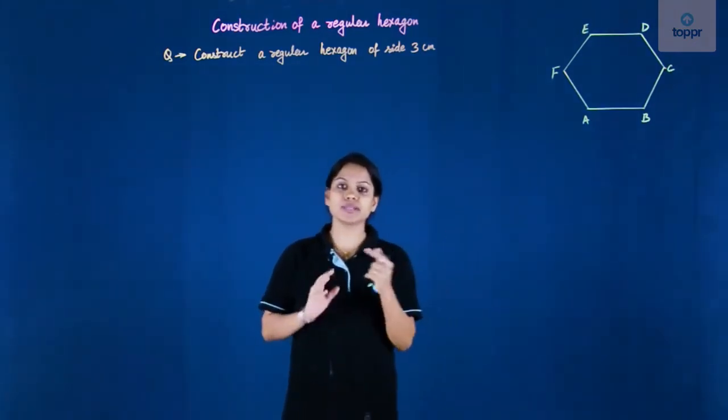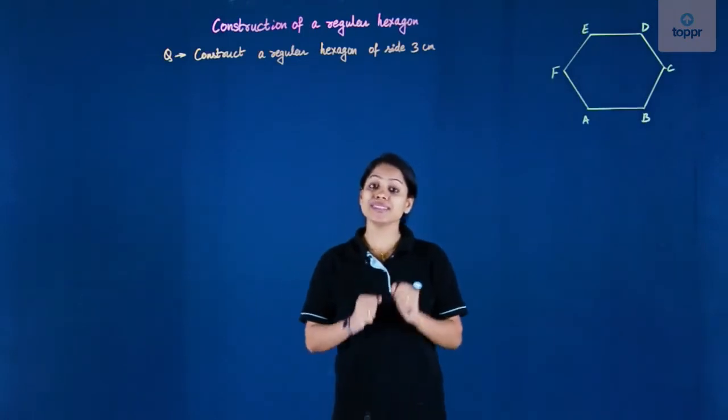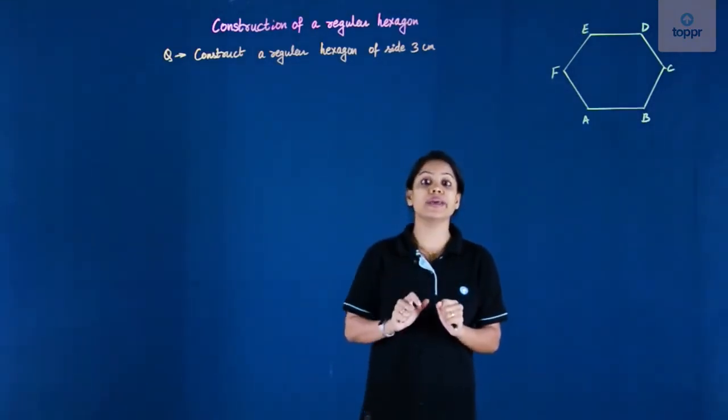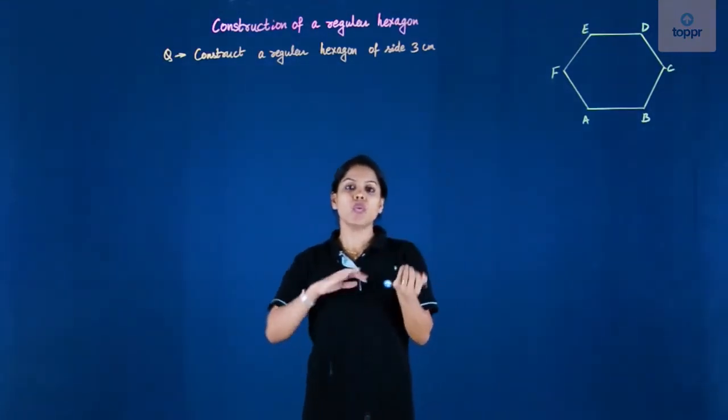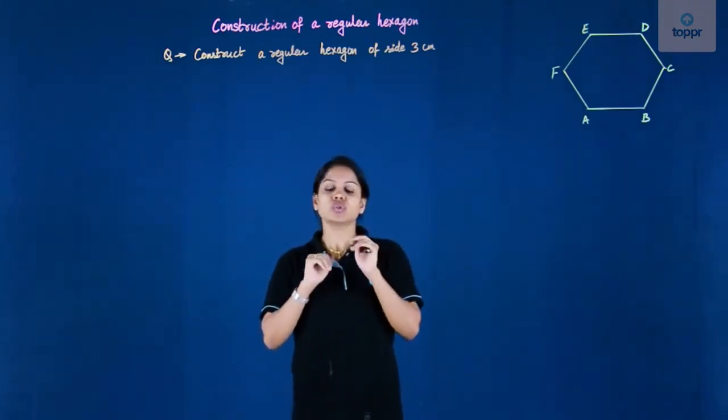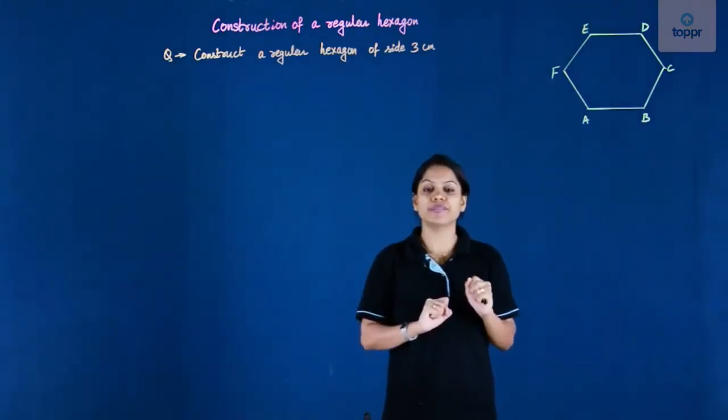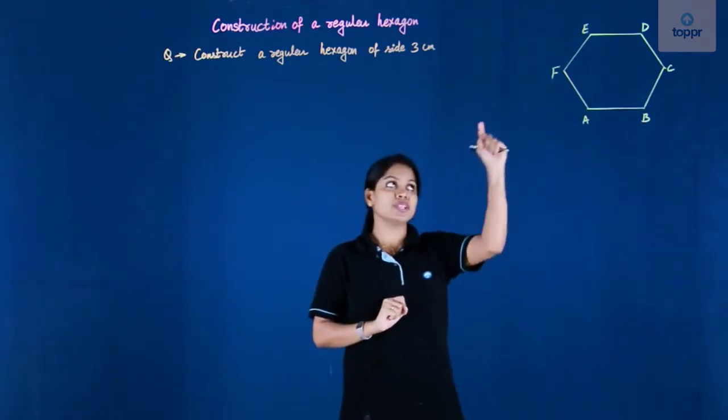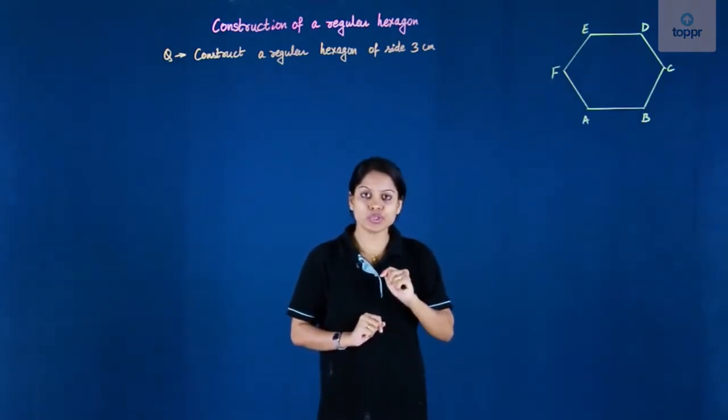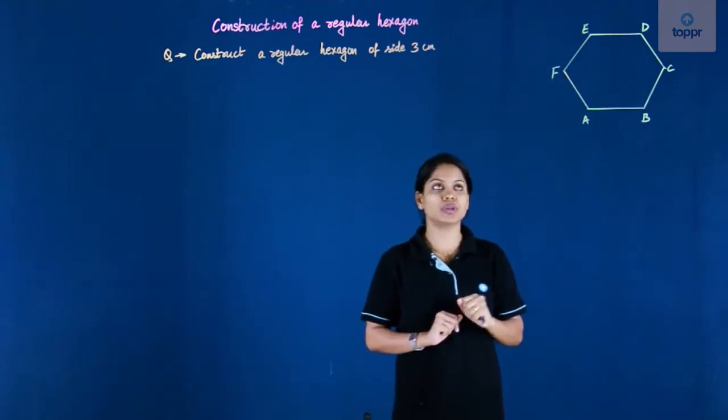You know that a hexagon is nothing but a polygon which has six sides, therefore the word hexa is there. Now what is a regular hexagon? It's basically a six-sided figure but it has all its sides equal to each other and also all its angles equal to each other.